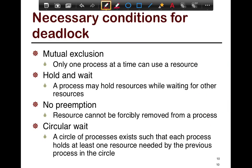Now let's look at the necessary conditions for deadlock. All these conditions need to hold in order for deadlock to happen — if even one of them is broken, you don't have deadlock. The first condition is mutual exclusion: only one process at a time can use a resource. If multiple processes can use a resource at the same time, there is no possible deadlock and no one is blocking anyone else.